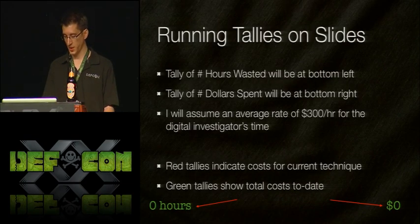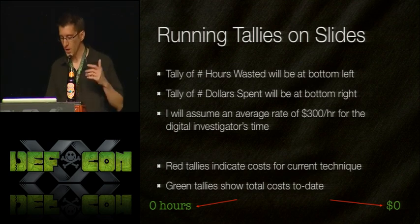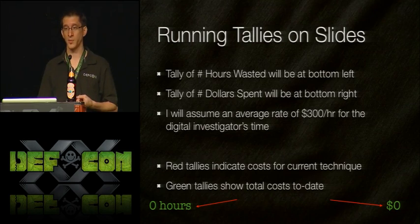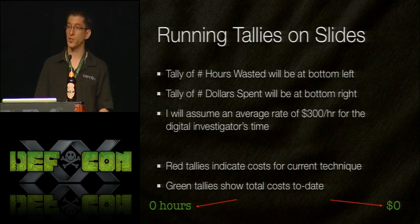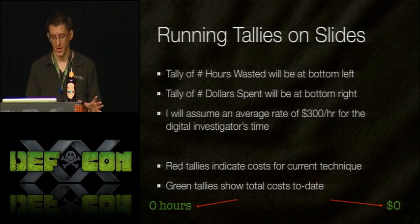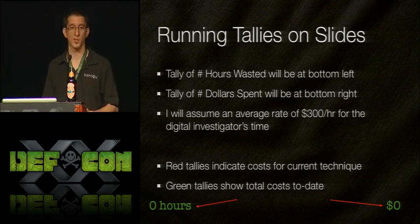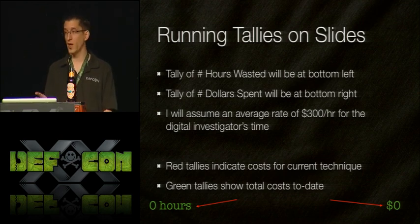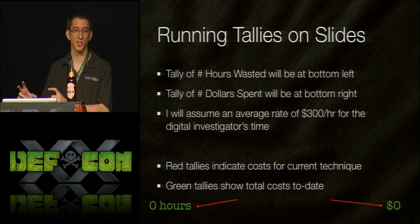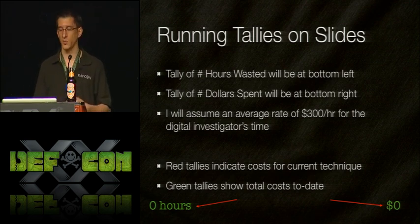On each of the slides, you're going to see running tallies at the bottom — the total number of hours wasted by the investigator and the total cost of the investigation. I'm going to assume the digital investigator is running at a rate of $300 an hour, which is a fairly average rate. The tallies will be green for running totals, and red for each individual technique. So without further ado, let's get started.